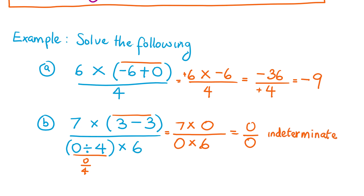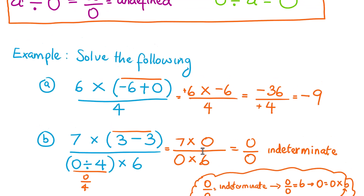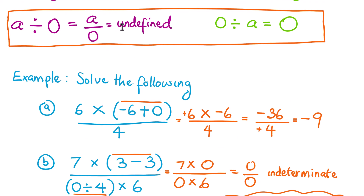Zero over zero is indeterminate. This comes from the idea that if zero over zero equals some value b, then zero equals zero times b — but we cannot determine what b specifically is. This is how indeterminate differs from undefined: undefined arises from a nonzero number divided by zero, while indeterminate arises from zero divided by zero.